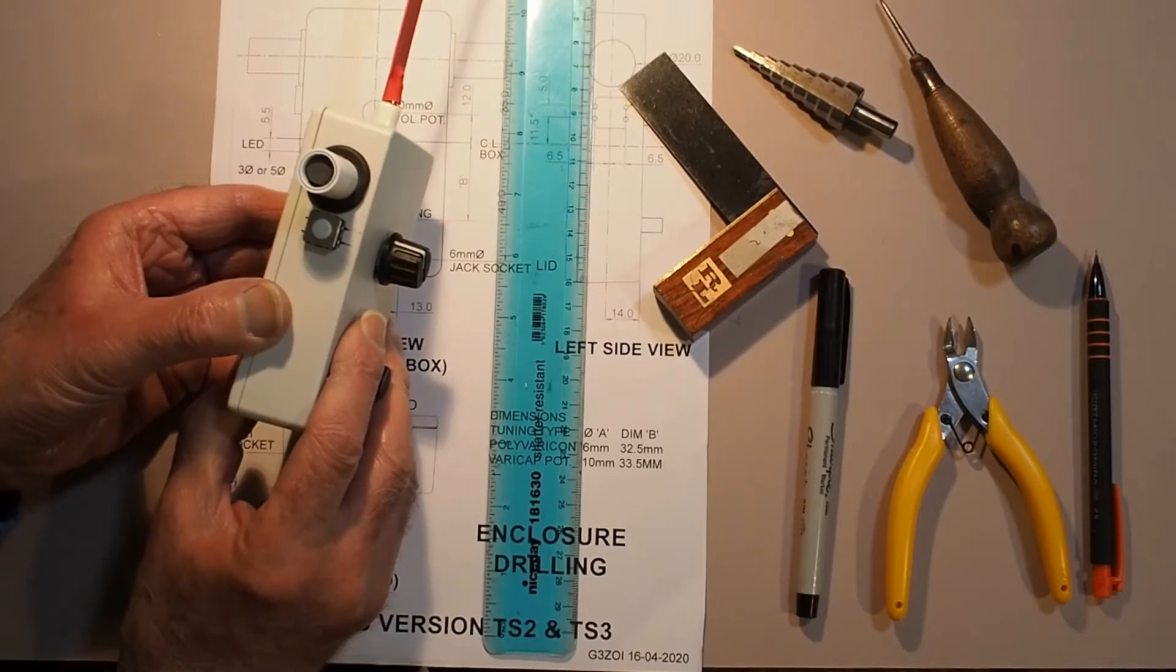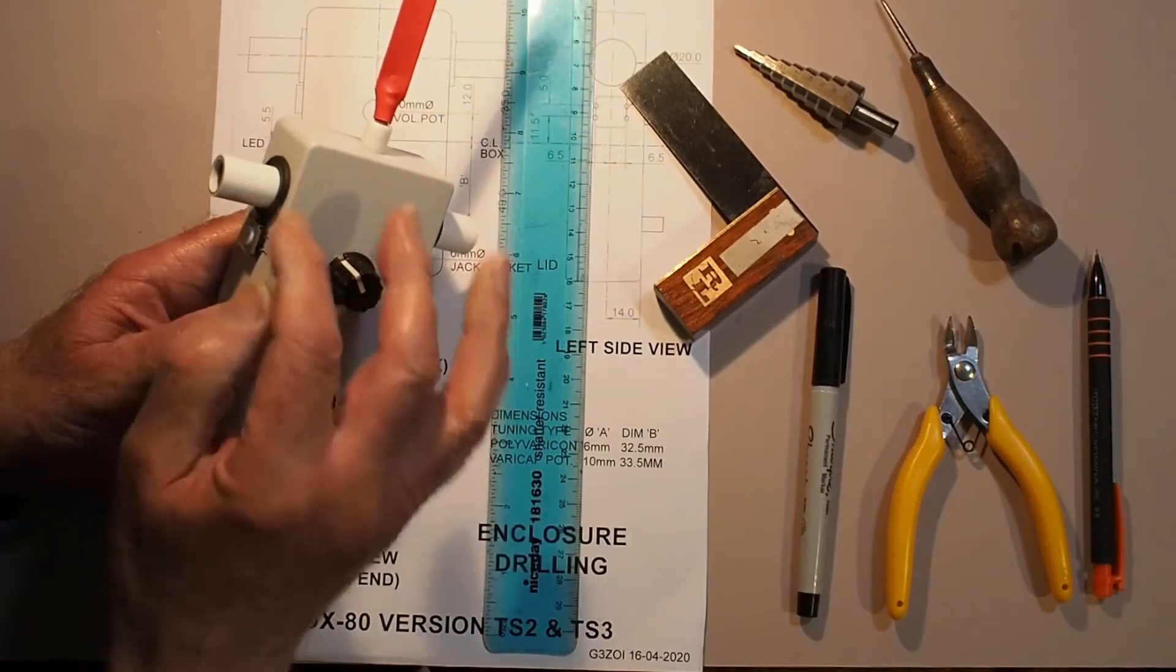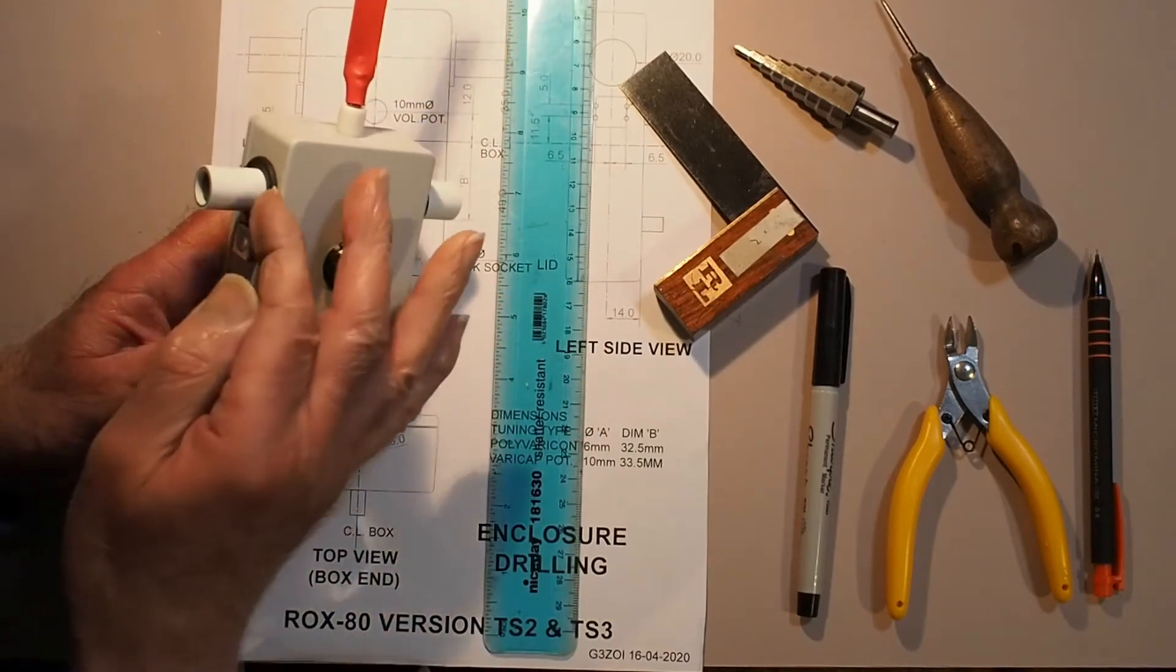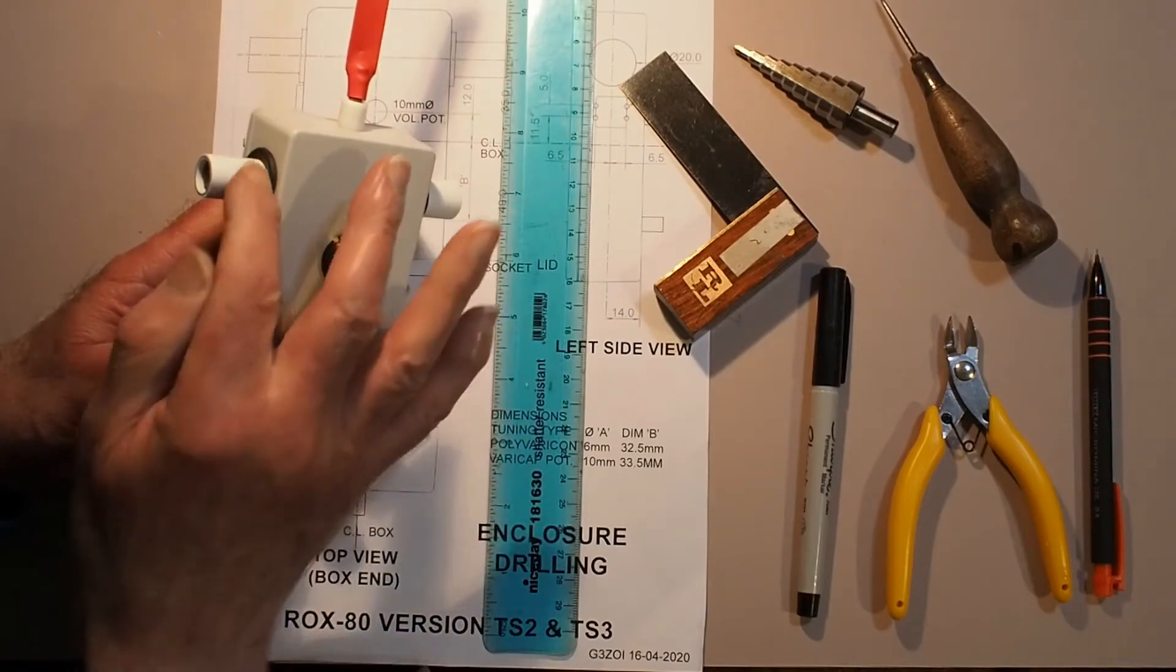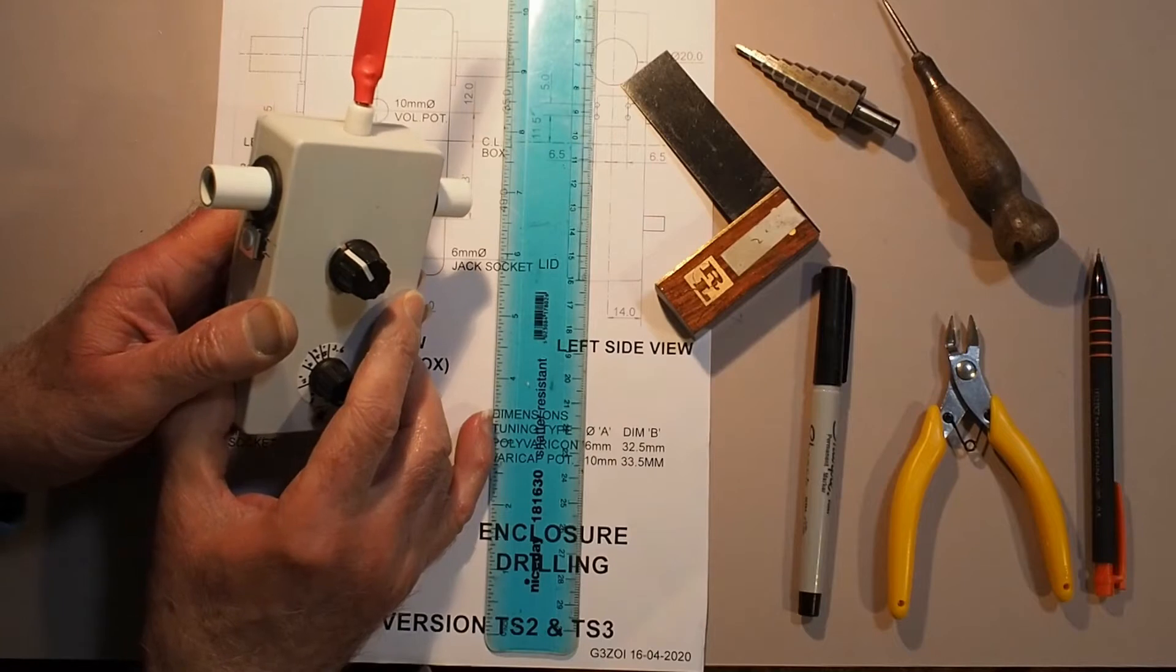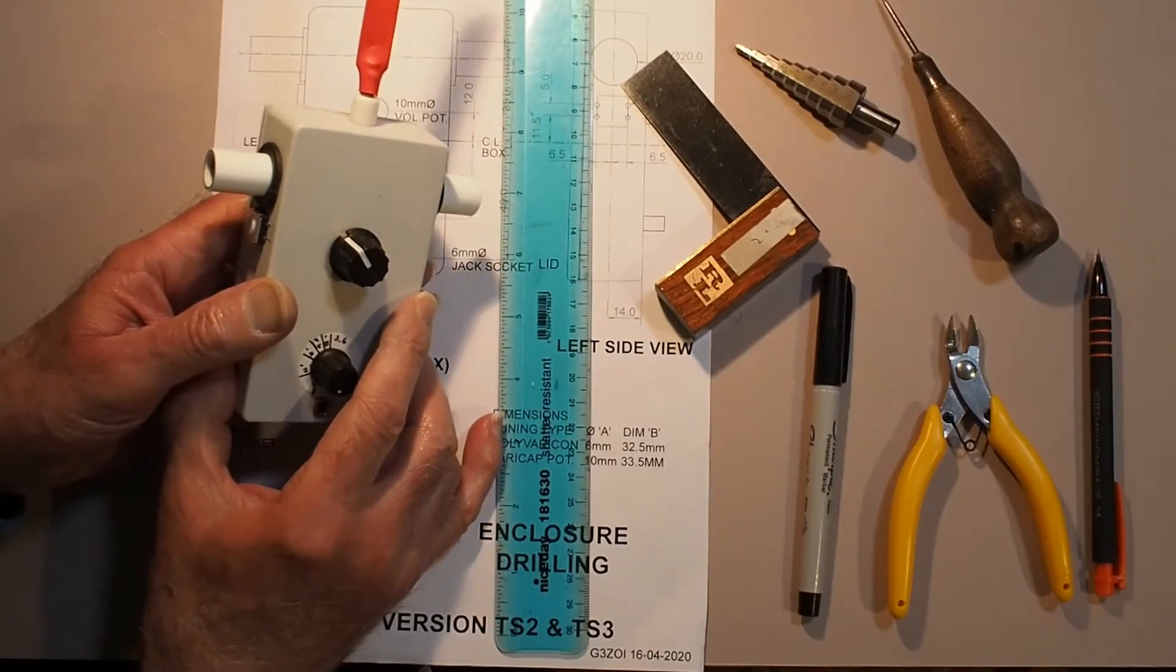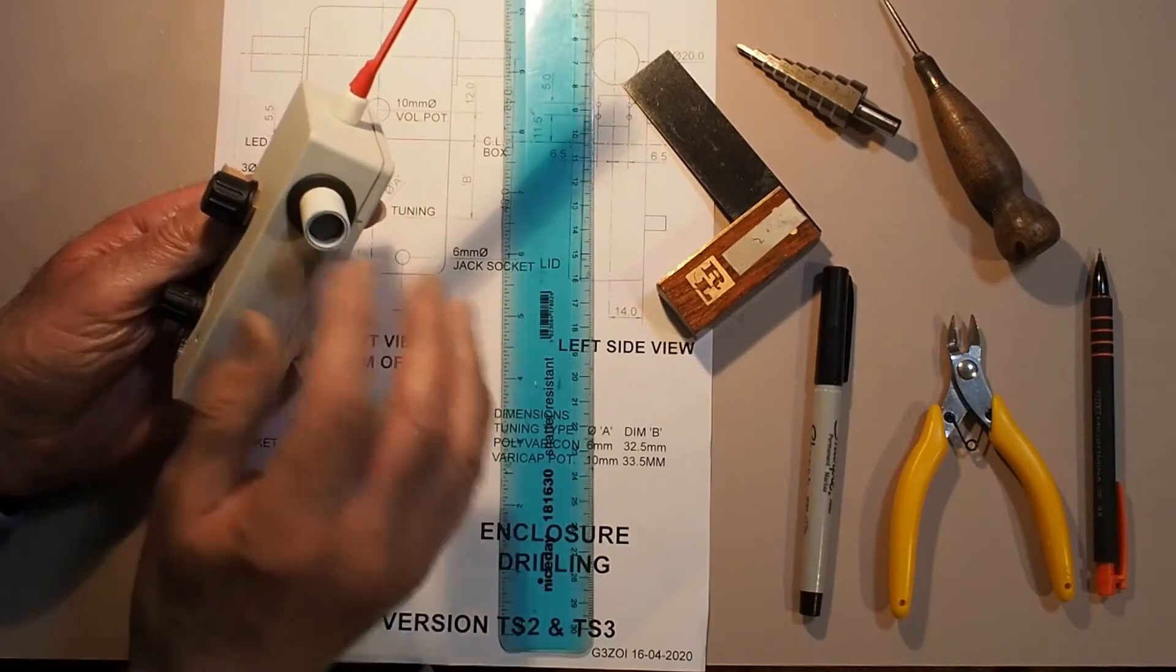And the only tricky problem is the holes for the ferrite rod assembly. These are quite large - 20 millimeters diameter - so you can get a standard electrical grommet into that hole. It's a little bit tricky, but other than that I'll go into more detail later about how I locate and drill these holes.